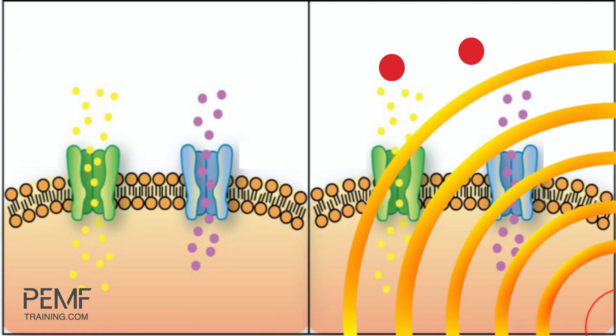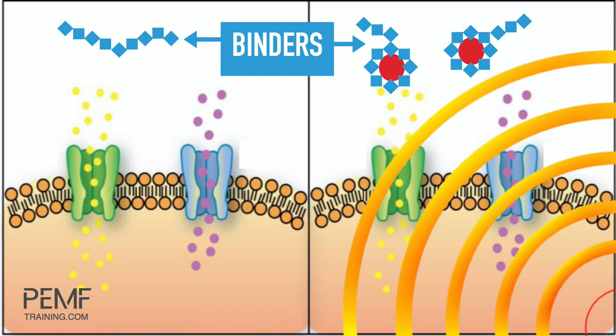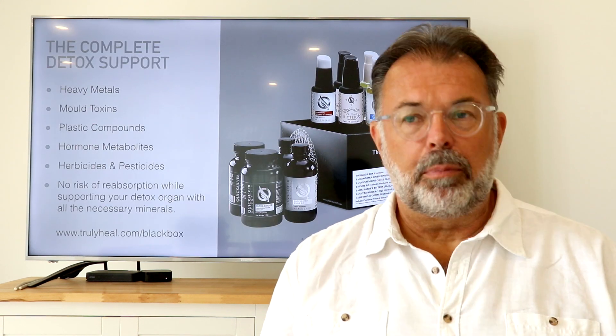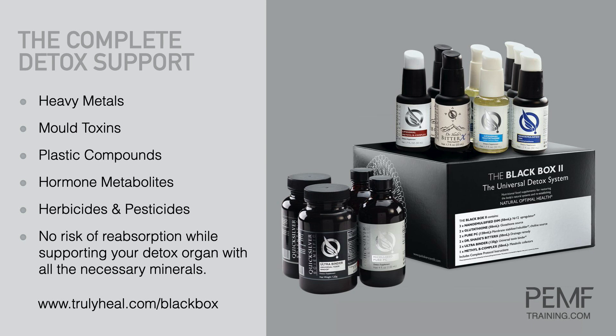What happens when you shake loose those toxins? Normally they just dock back on, which is a problem. Some patients who are very toxic, do PEMF for too long, and have nothing to bind the toxins — they dock back on in different locations and the patient feels a headache or nausea; they've overdone it. In those cases we need binders. Binders like the Black Box, for example, use long-chain molecules that grab onto those heavy metals and help with the elimination process.